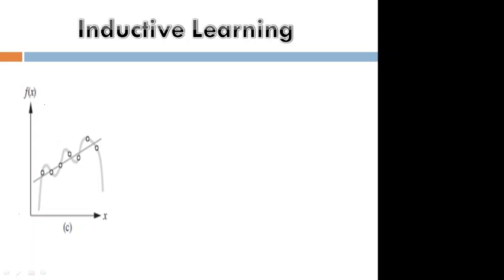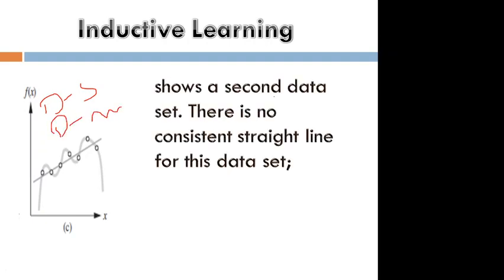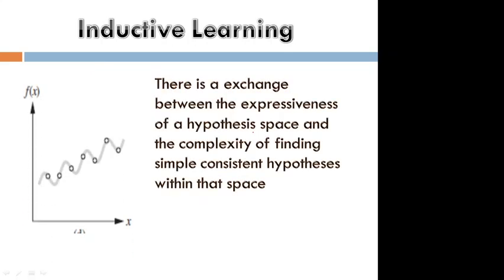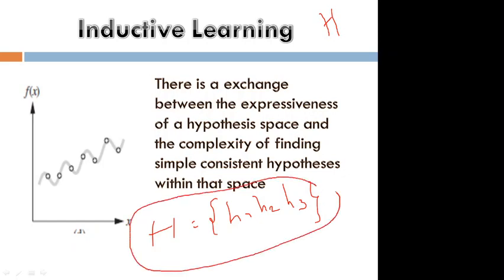In the third diagram there is a straight line for one data set and a curve for another data set. The second data set is used because the first one is not satisfied. In the last diagram we consider a hypothesis space with three elements — h2 and h3 — and we must find the hypothesis within this space, not outside it. This is called inductive learning.